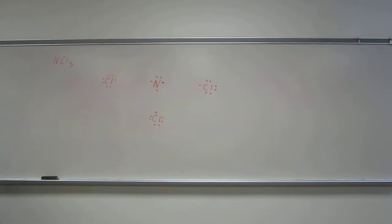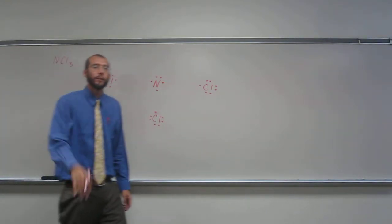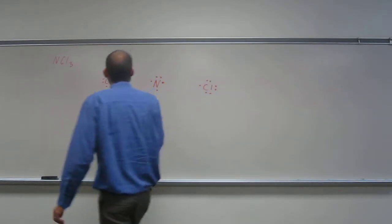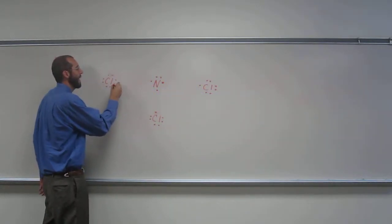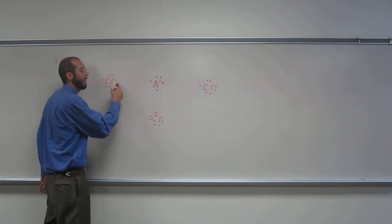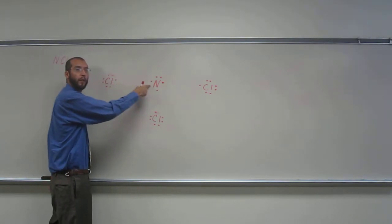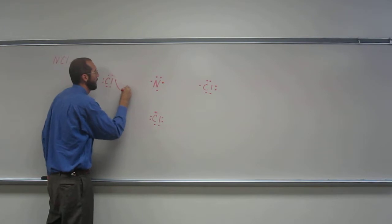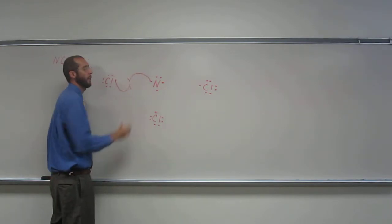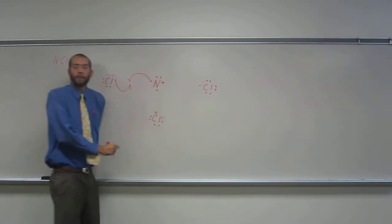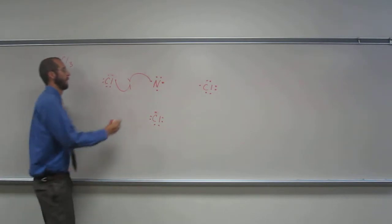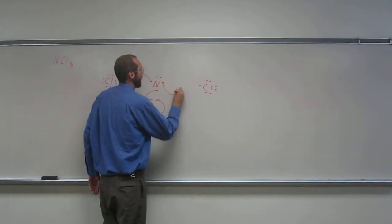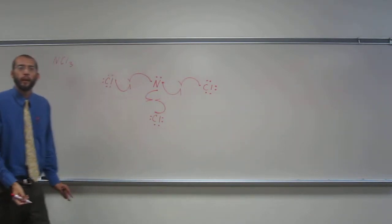Okay, so now what are we going to do? Remember our fish hook arrows. So those are the arrows with like half a little arrow head. So instead of the electron transferring going from the chlorine to the nitrogen, we're going to have them meet in the middle. So like that.